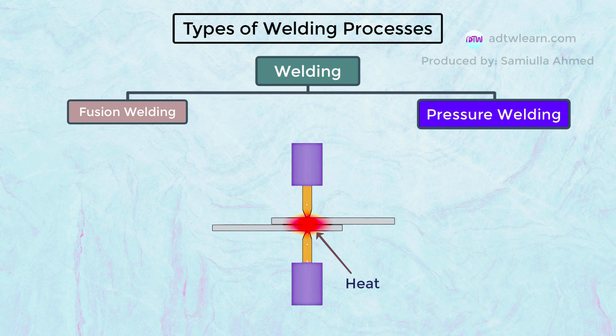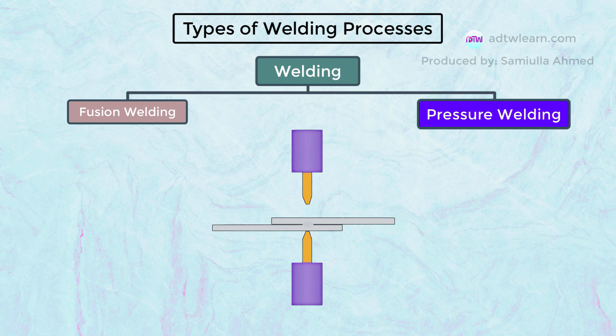Generally, the heat used during pressure welding is below the melting point of the metals being joined. Here there is a plastic deformation of the metal, and due to the external pressure the joining of the metal occurs.